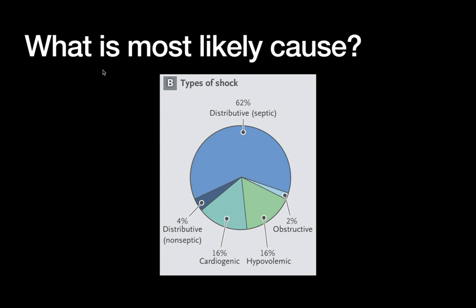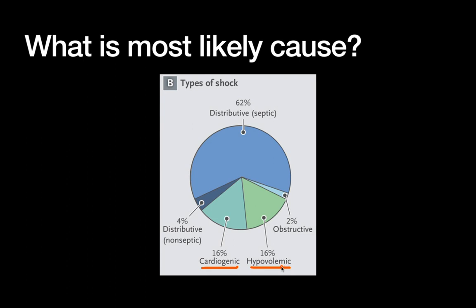It's important to know the background probability of what you're most likely treating. From a NEJM 2010 article, shock types are not evenly distributed. Distributive septic shock accounts for 62% of cases — a vast majority. Hypovolemic and cardiogenic are each about 16%. Non-septic distributive shock is only 4%, and obstructive shock is even rarer at around 2%.